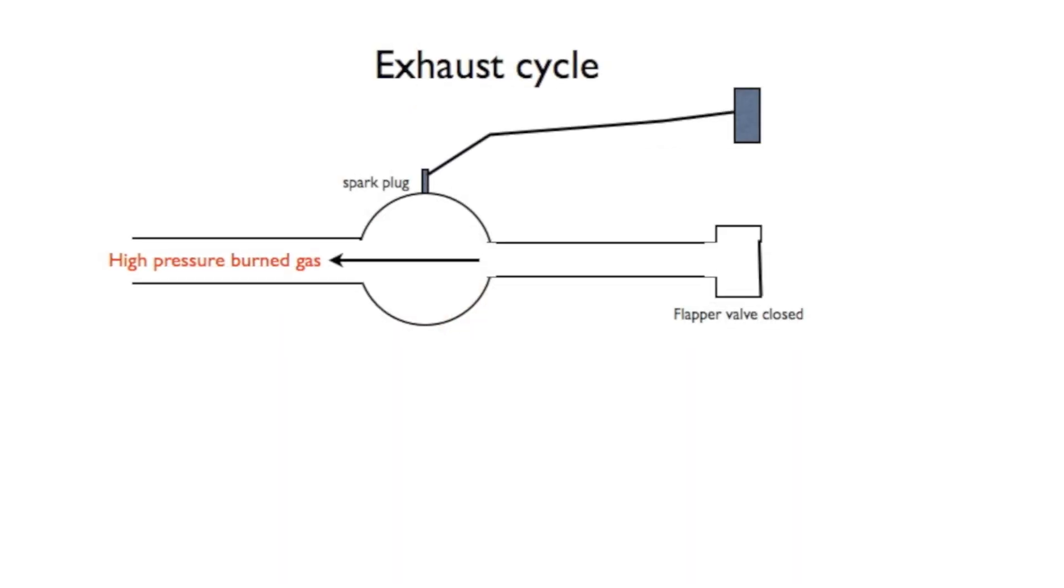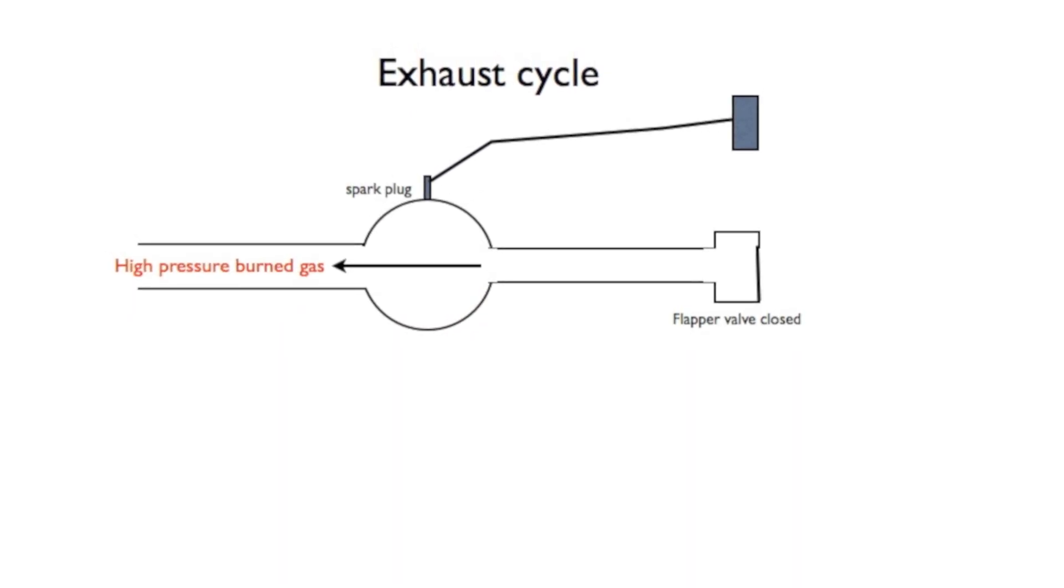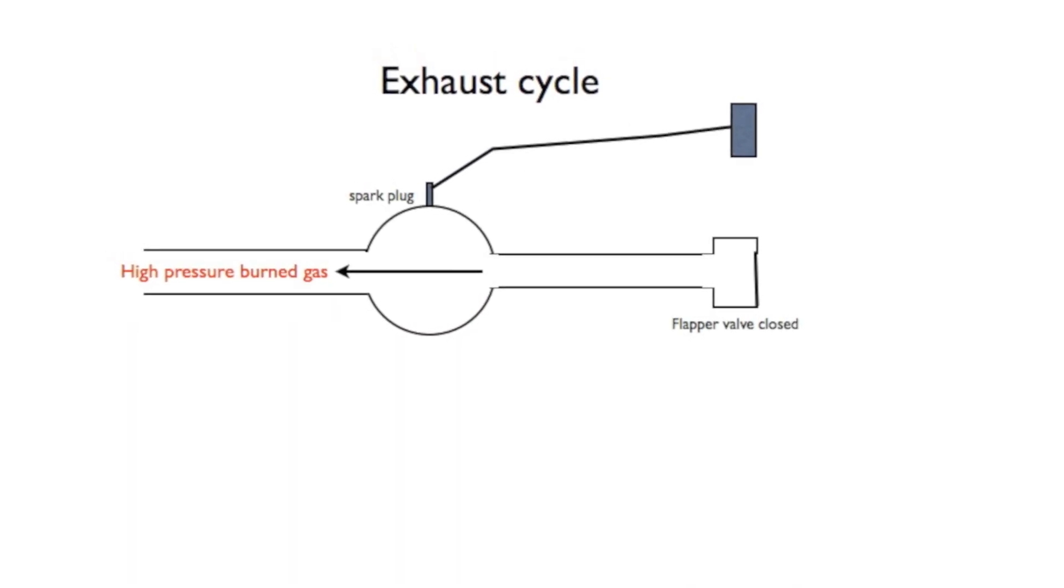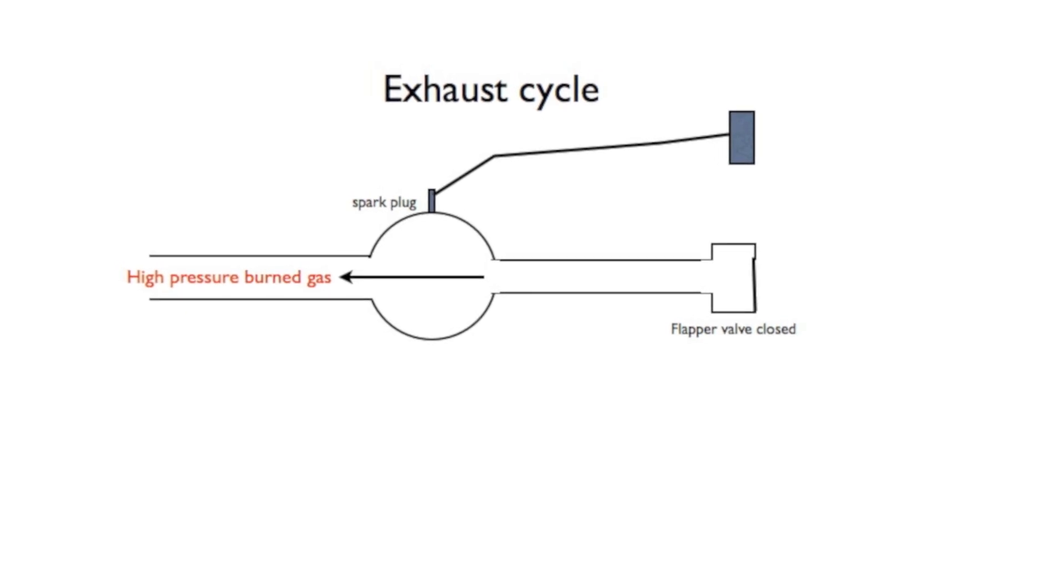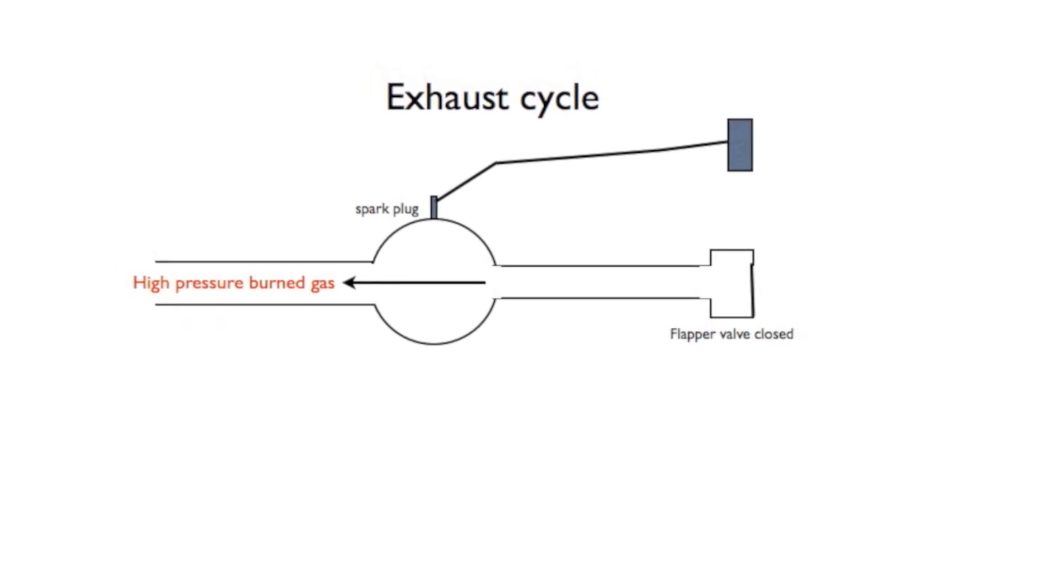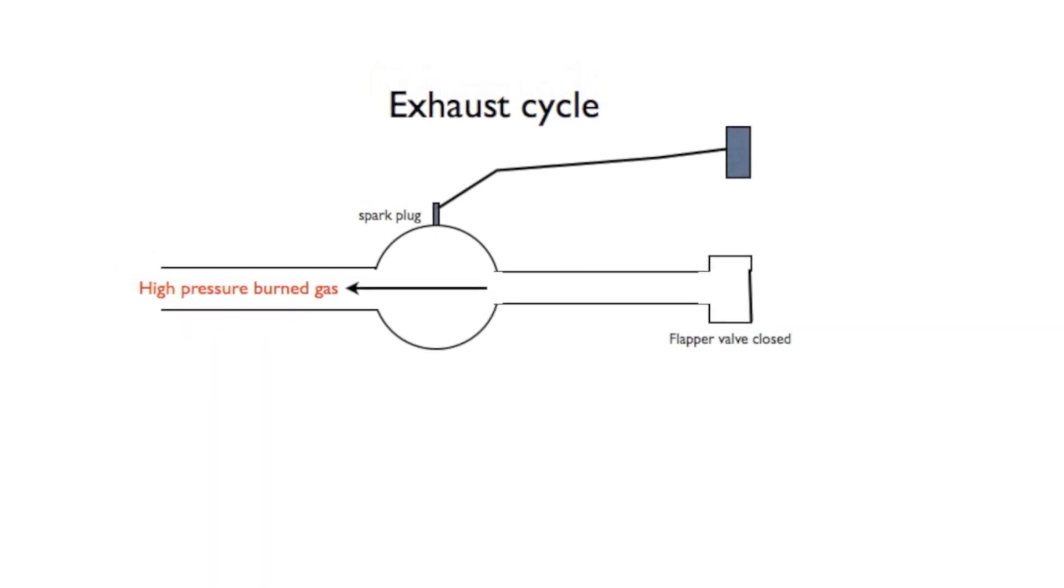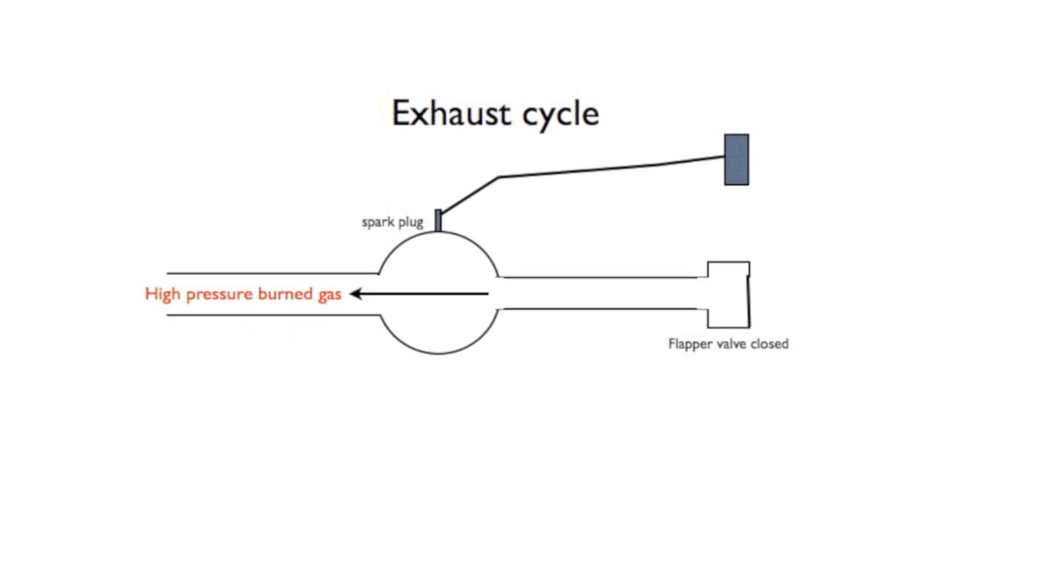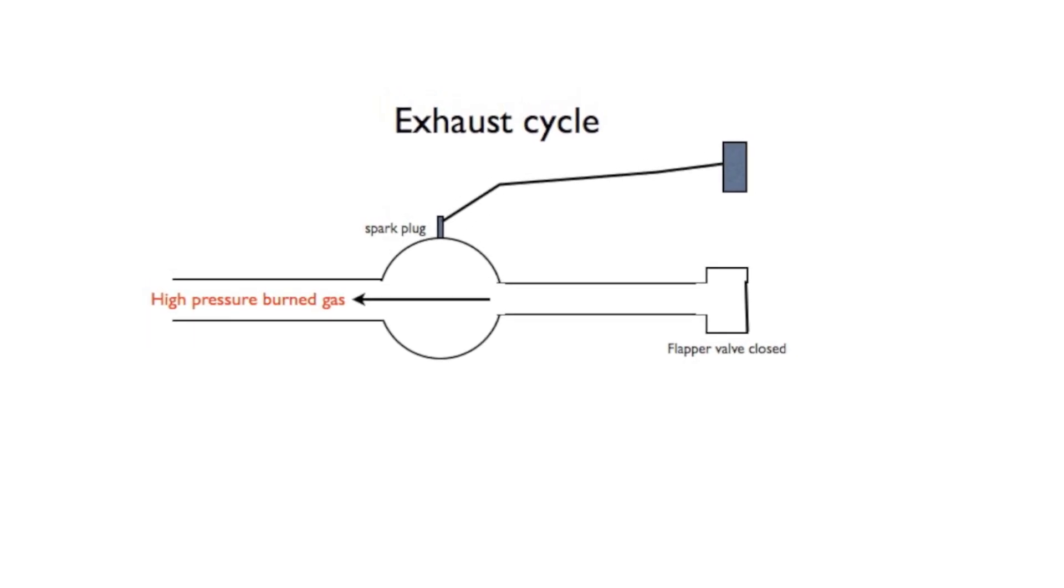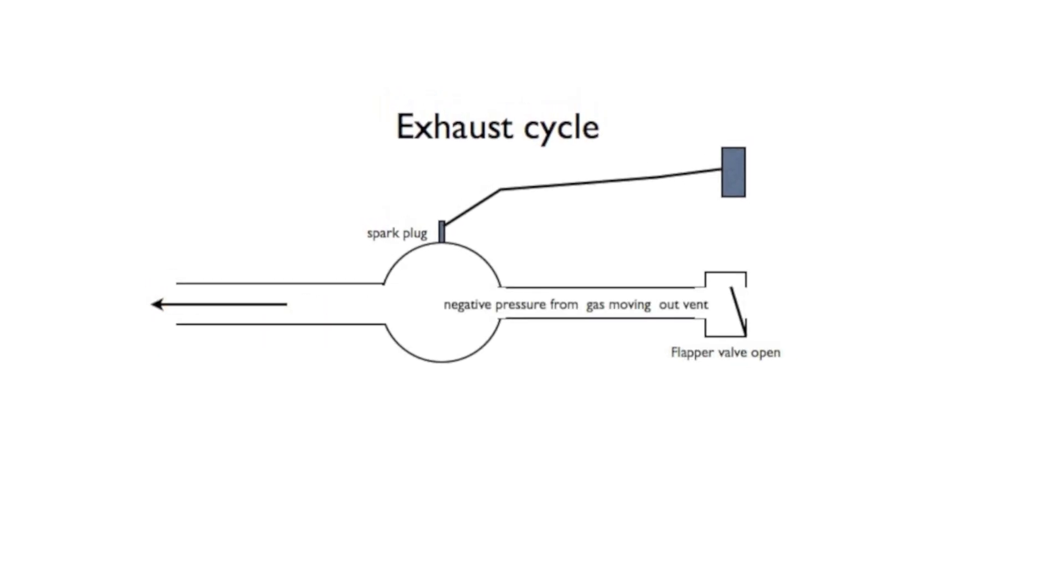Now, as they move out the left, the inertia of the expanded gases is going to pull a negative pressure on that little combustion chamber, and when it pulls that negative pressure, you'll see that that flapper valve is going to open again.